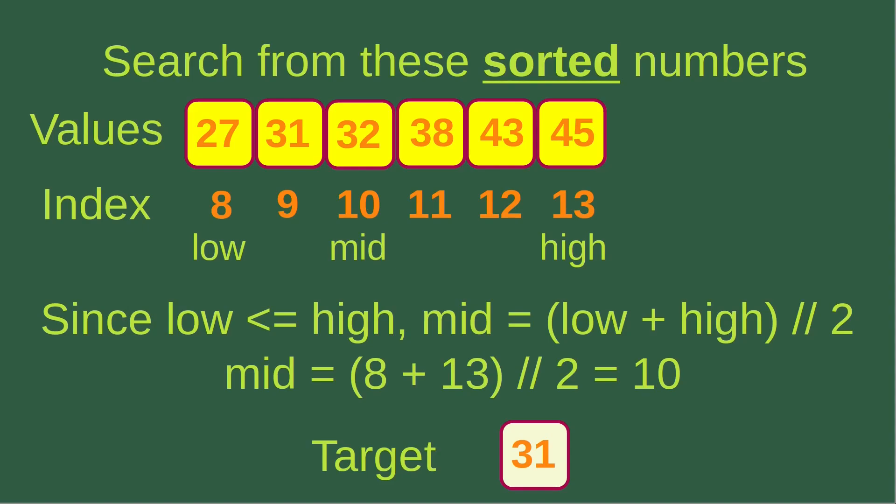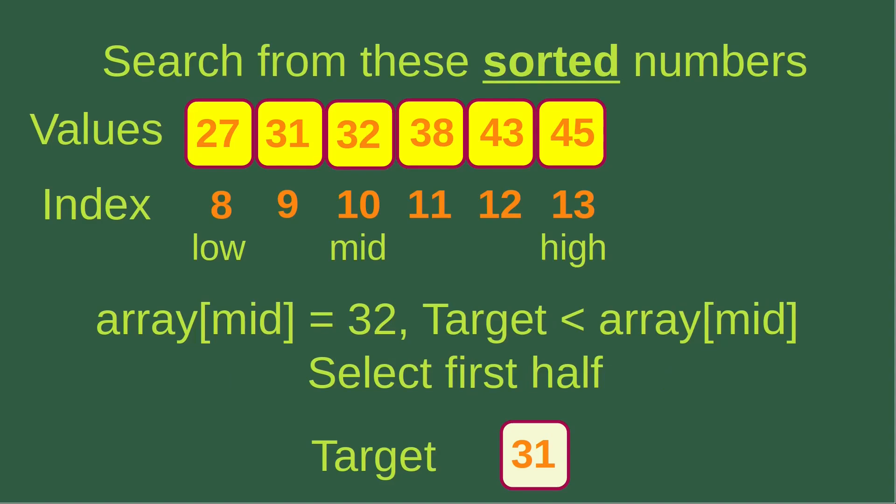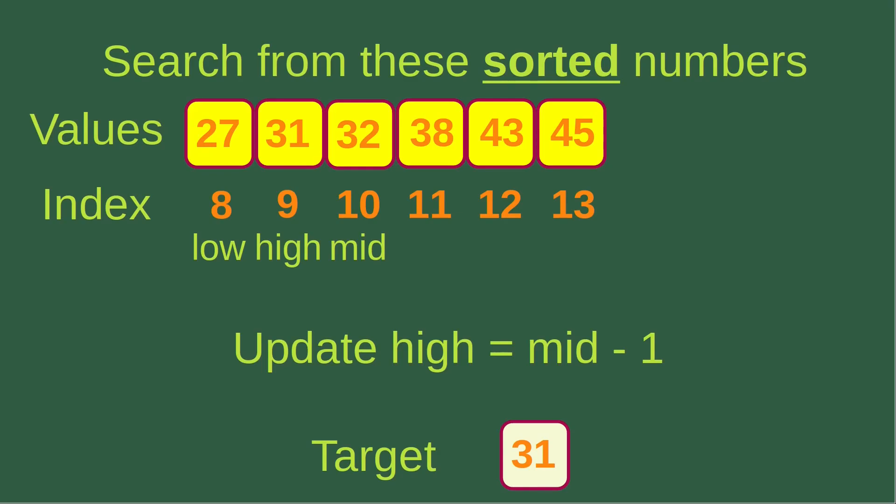Index number 10 corresponds to the value 32. Now we know that the mid-element is actually larger than the target, so we have to choose the first half to do further division. Because we want to pick up the left-hand portion, we update the value of the high index to mid minus 1, so now the high index becomes 9.